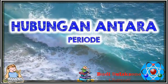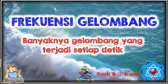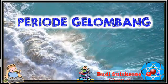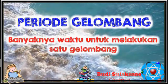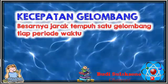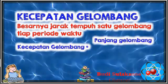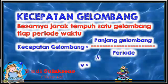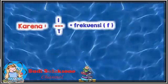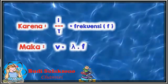Hubungan antara periode, frekuensi, dan kecepatan gelombang: Frekuensi gelombang adalah banyaknya gelombang yang terjadi setiap detiknya, diberi satuan hertz. Periode gelombang adalah banyaknya waktu untuk melakukan satu gelombang, diberi satuan detik atau sekon. Kecepatan gelombang adalah besarnya jarak tempuh satu gelombang tiap periode waktu, dirumuskan dengan V = λ/T, atau karena 1/T = F, maka dapat pula dituliskan sebagai V = λ × F.